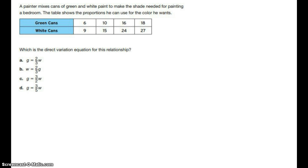Now I want you to write down everything that I have written down too, including the table. A painter mixes cans of green and white paint to make the shade needed for painting a bedroom. The table shows the proportions he can use for the color he wants. Which is the direct variation equation for this relationship. So we know that there's a direct variation between green cans and white cans. We need to know what that equation is. In other words, we need to find our constant of proportionality.